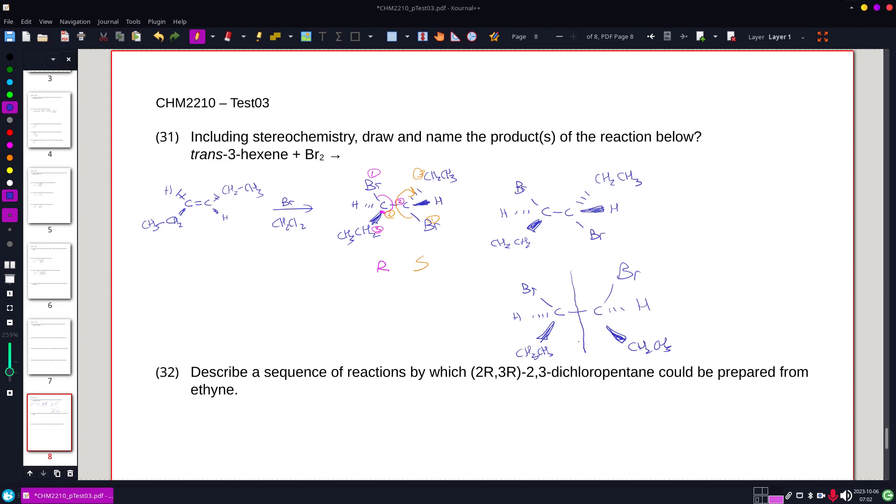And being a mesostructure, whatever rotation I find on one side, the other side has to be opposite. And there isn't any enantiomer because it is a mesostructure.